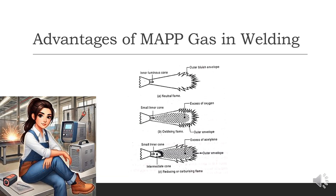Oxyfuel gas welding (OFW) is one of the oldest and most versatile welding processes. It uses a flame produced by the combustion of oxygen and a fuel gas to generate the heat necessary for melting metal and forming a weld. This process is commonly used for light fabrication, repair work, and cutting operations. The main components of an oxyfuel welding system include oxygen and fuel gas cylinders, which store and supply the gases needed for combustion.